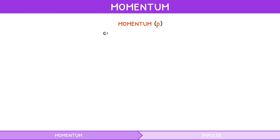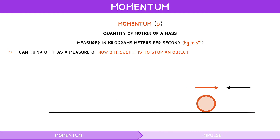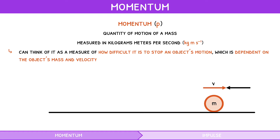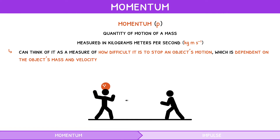Momentum is defined as the quantity of motion of a mass, measured in kilograms meters per second. You can think of it as a measure of how difficult it is to stop an object's motion, which is dependent on the object's mass and velocity. For example, imagine a friend throws you a football at 2 meters per second, and then throws you a bowling ball at 2 meters per second. It is much easier to catch the football than the bowling ball, as the bowling ball has more mass and therefore more motion.